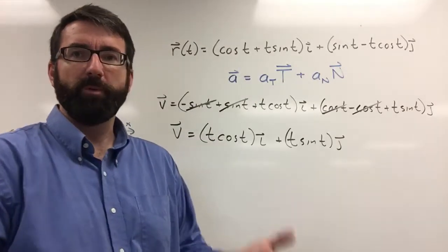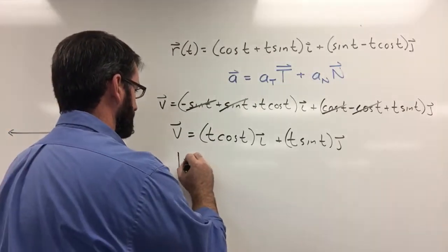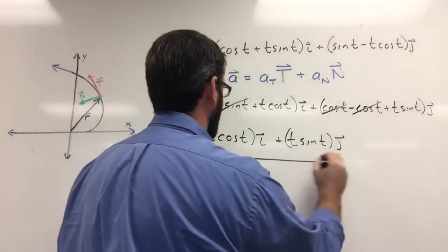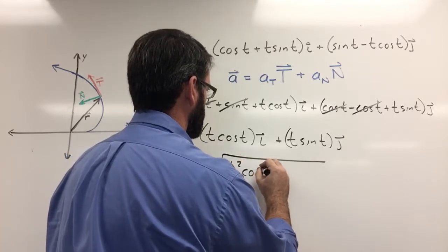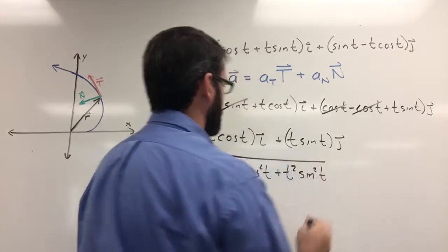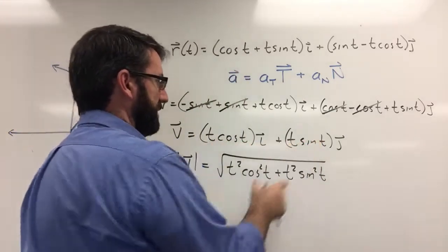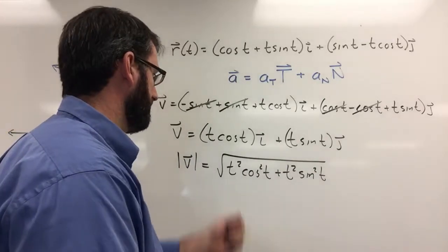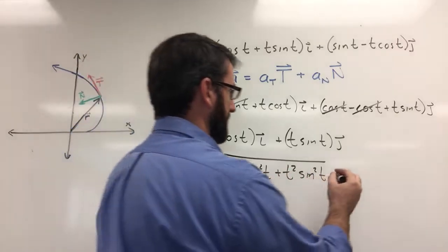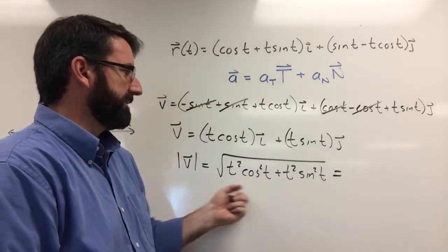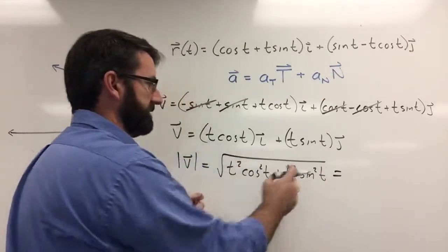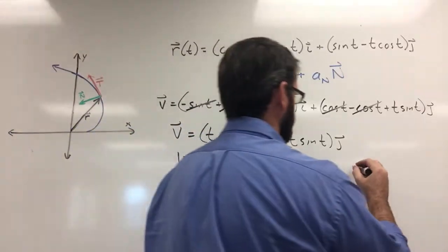Now we need the magnitude of this velocity vector, which equals the square root of t squared cosine squared t plus t squared sine squared t. If we factor out t squared, we get t squared times cosine squared plus sine squared, which equals 1. So this is just the square root of t squared, which is t.